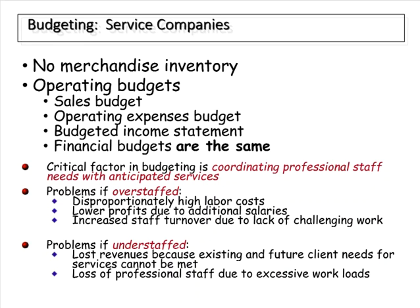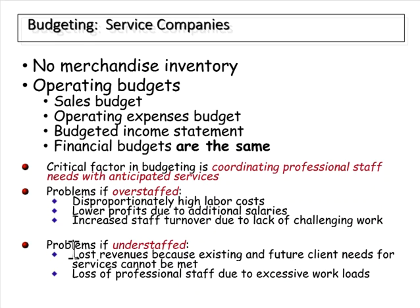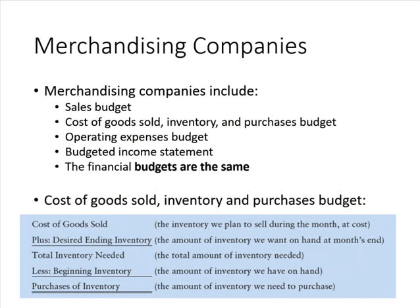Service companies have no merchandise inventory, so their operating budgets are only going to include the sales budget, operating budget, and the budgeted income statement. The financial budgets are all the same as would appear for a manufacturer. The biggest issue for service companies will be coordinating professional staff with anticipated needs, making sure that we're not over- or understaffed, as either of those can cause significant problems.